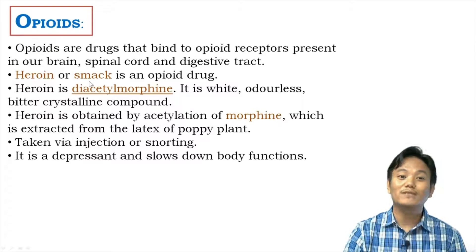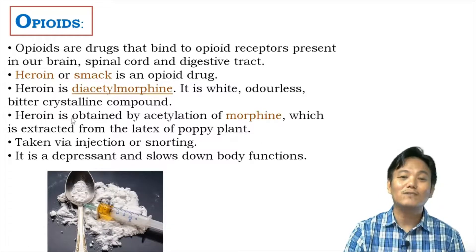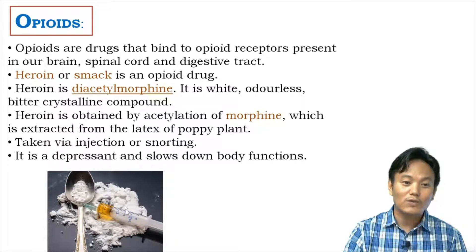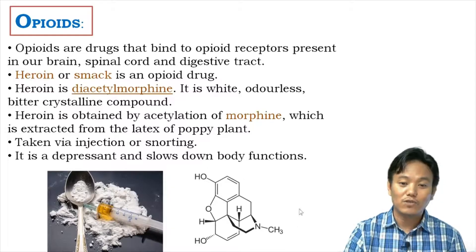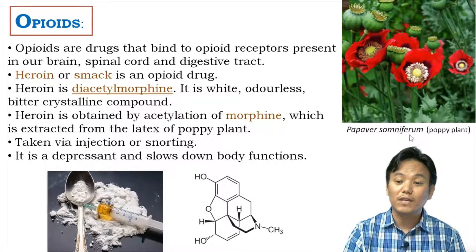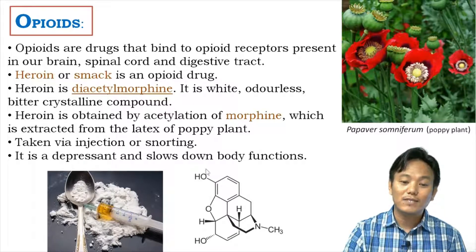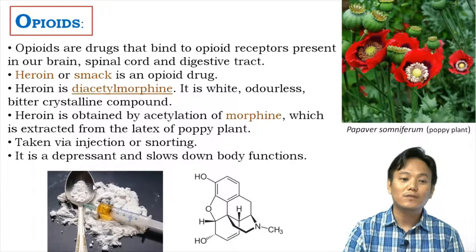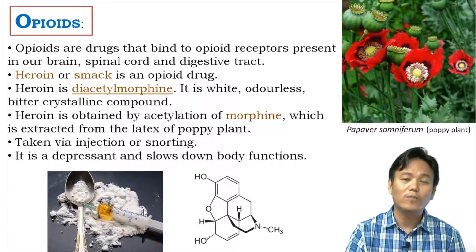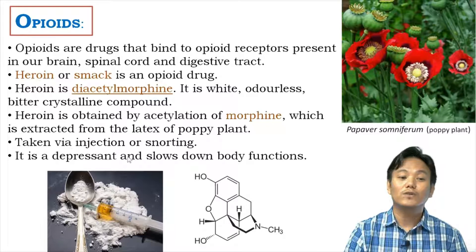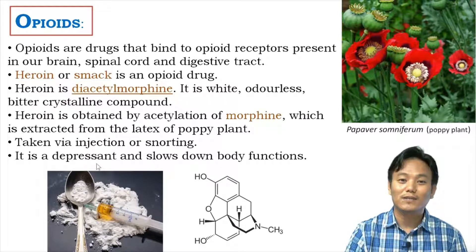One example of an opioid drug is heroin, commonly called smack. Chemically, heroin is diacetylmorphine — white in color, odorless, and a bitter-tasting crystalline compound. It is obtained by acetylation of morphine, which is extracted from the latex of the poppy plant, Papaver somniferum. Heroin can be taken by injection or by snorting, and it slows down body functions including heart rate and breathing rate, making it a depressant.